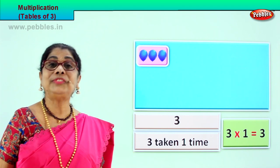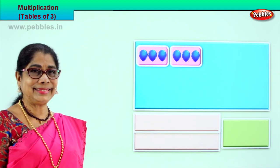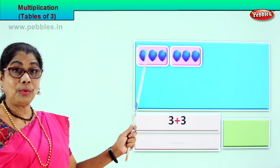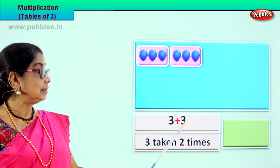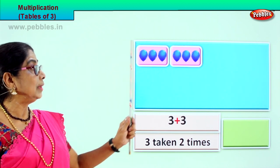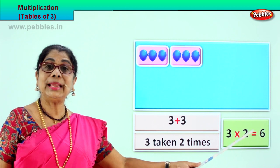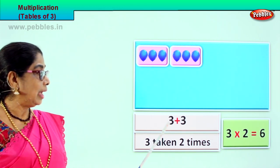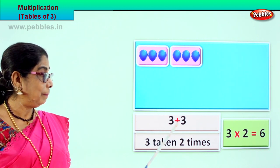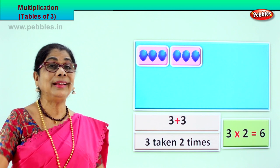Shall we go to the next grouping of three? Look what you have. One group of three, another group of three. Three plus three is six. So you write here — three taken how many times? Three taken one, two times. Three plus three is six. Three taken two times. One set of three, two set of three. That is three into two is six. Repeated addition: three plus three is six. Three taken two times, so we write three into two is six. Three twos are six.